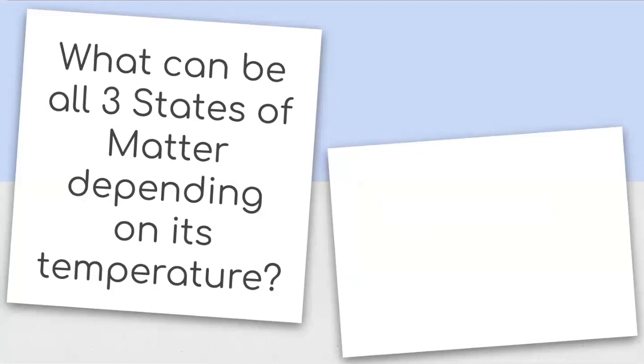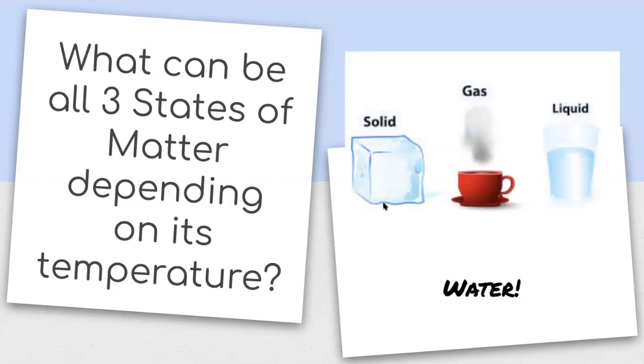What can be all three states of matter depending on its temperature? Way back in kindergarten, we learned about this. What object on our planet can change its state of matter depending on its temperature? Water, right? Water is a solid when it's ice, when it's frozen. It's a gas when it evaporates like steam or water vapor. And it's a liquid, the water that you drink or the water that you take a shower with or swim in in a pool, right? Next question.